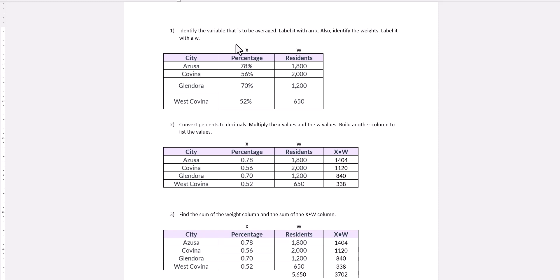Step one is to identify the variable that is to be averaged. In this case, it's the percentage. The final answer should be written as a percentage because it's asking to find the weighted mean percentage.